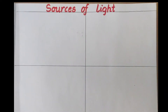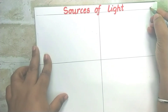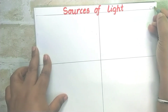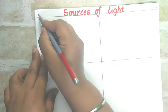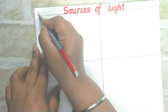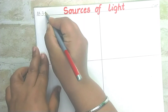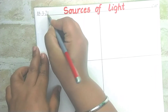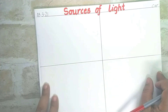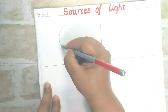Today we are going to draw sources of light. For this, divide the page into 4 equal parts. Write down classwork on the right side and date on the left side. The date today is 18-3-21. Now let's start with the first one — the biggest and natural source of light is the sun.